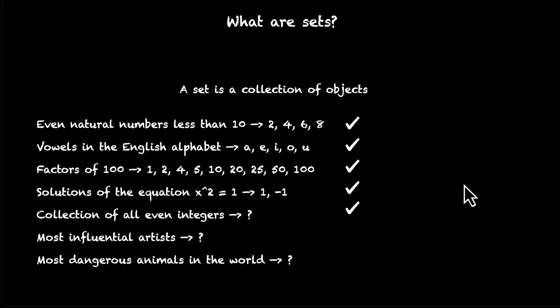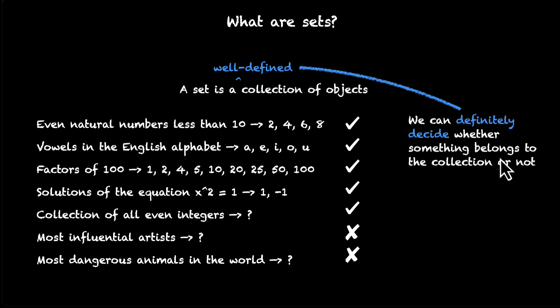A set is not just any collection of objects. A set is a well-defined collection of objects. You should be able to clearly tell whether something is part of the set or not. For the collection of even integers, you can say that minus 5 is not part of it, but minus 6 is. Here the collection is well-defined. For the next two, the collection is not well-defined, it is loosely defined. So these two are not sets. So what's a set? A set is a well-defined collection of objects, which means we can definitely decide whether something belongs to the collection or not. Whenever we can do this, we can say that it's a set. Whenever we can't, we can say that it's no longer a set. It's not a set. Sure, it's a collection, but it's not a well-defined collection.